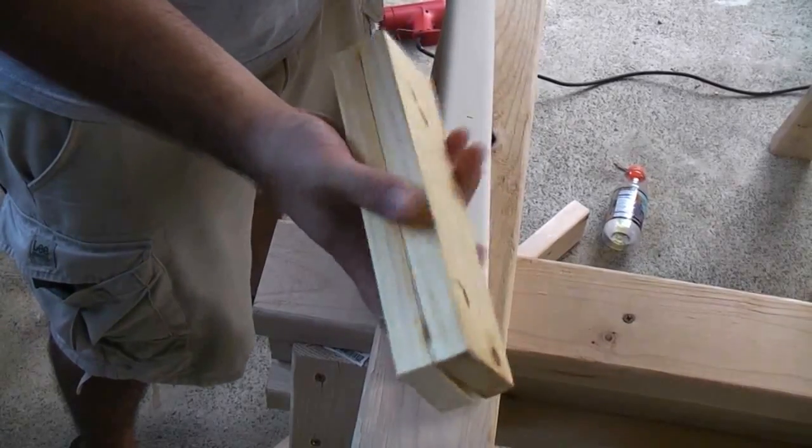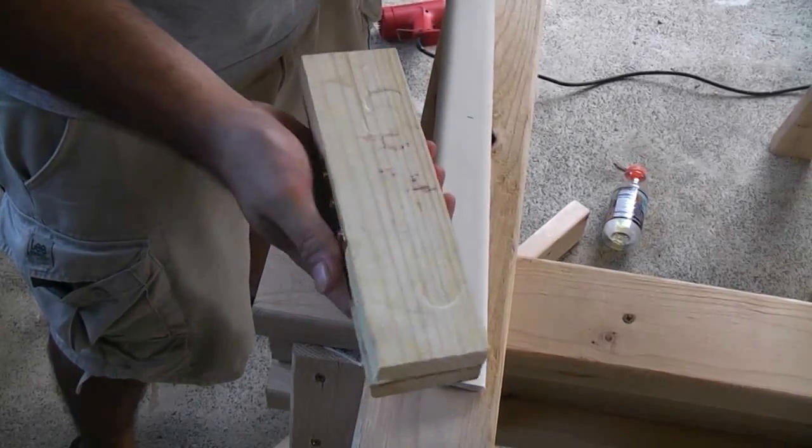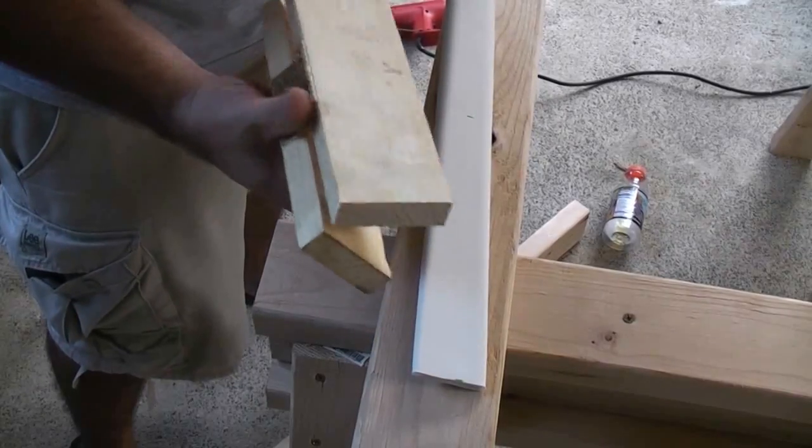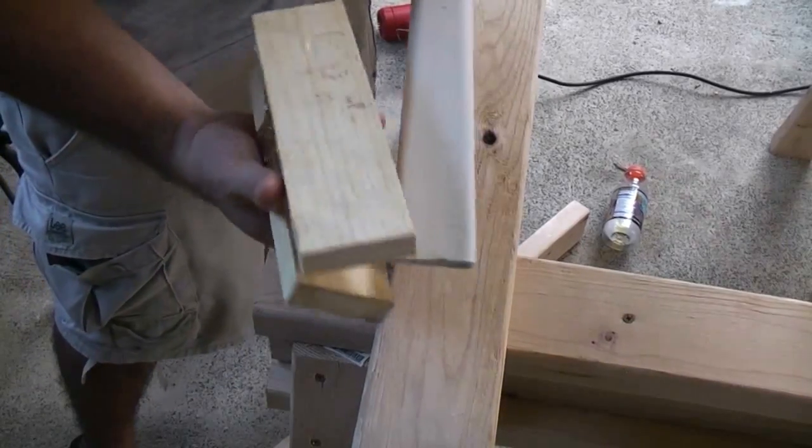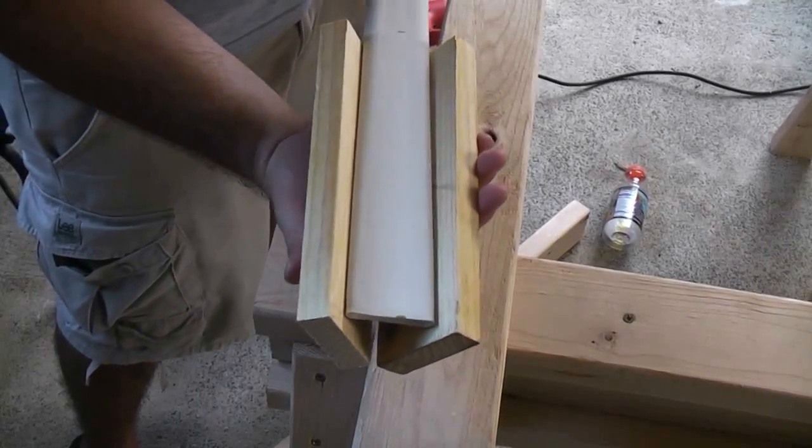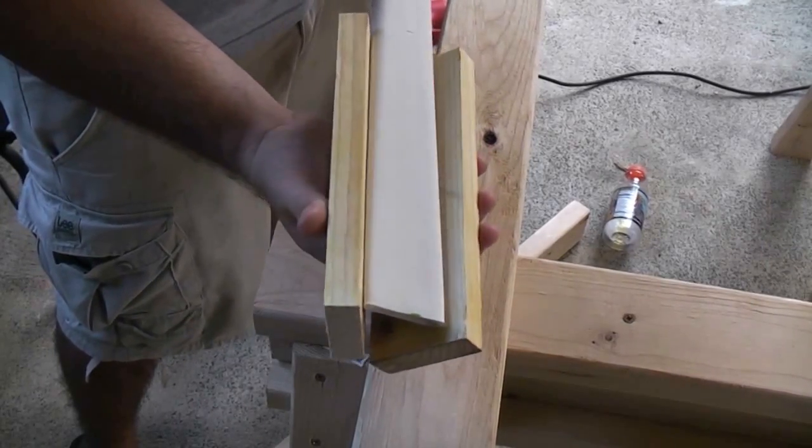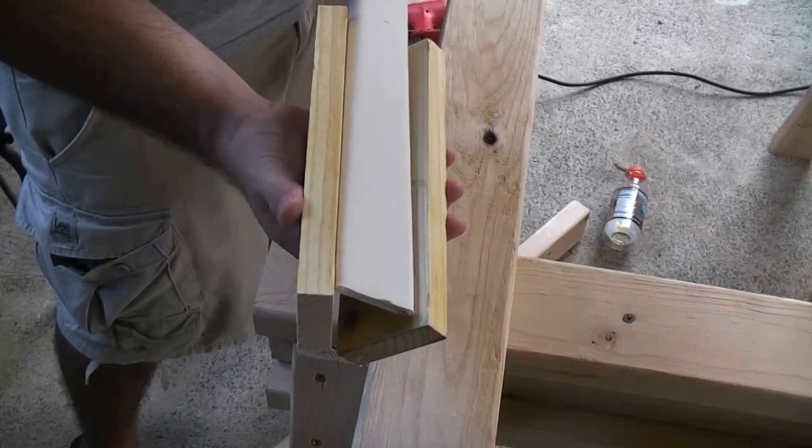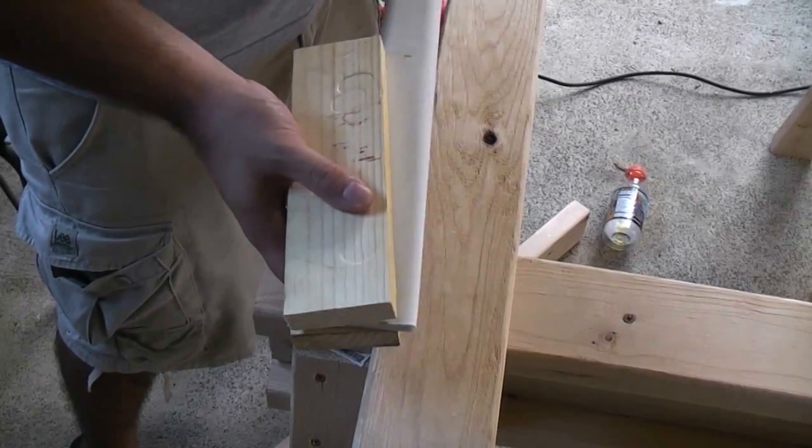If you use a 1x2 you're going to find that when you try to clamp on this, the starting angle is going to be too much and you can't get a good clamping pressure. So this will allow you to clamp this properly.